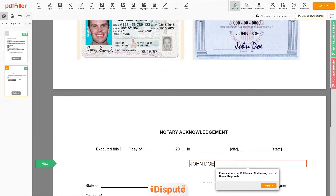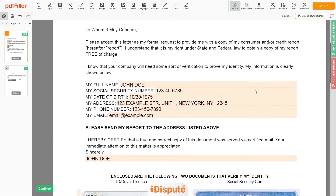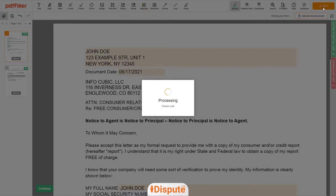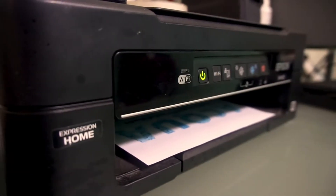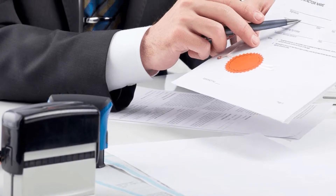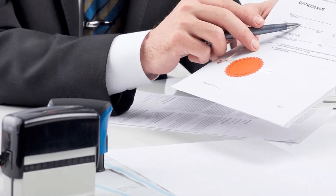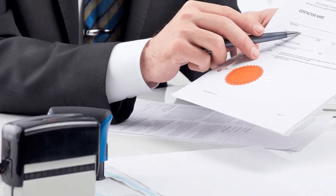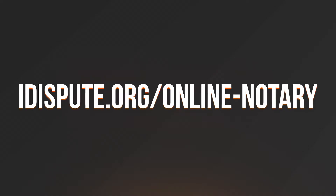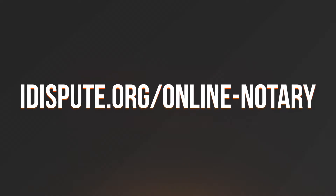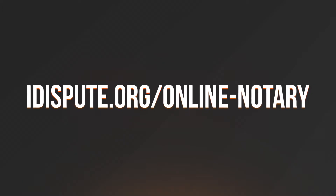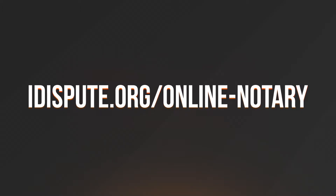Good job, your document is ready. Check your personal information one more time and click the Buy button. Proceed with the payment to download and print out the document from your computer. Before the final step, you need to notarize your document. Be sure to keep the original copy of the letter for your records. For your convenience, please use the online notary service by following the link idispute.org/online-notary.